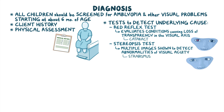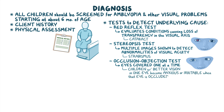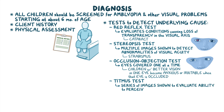Another test is the occlusion objection test, which is when the child's eyes are covered one at a time, and children with better vision in one eye typically become anxious or irritable when that eye is occluded. There is also the Titmus test, during which a series of images are shown to the client to evaluate their ability to perceive visual depth.